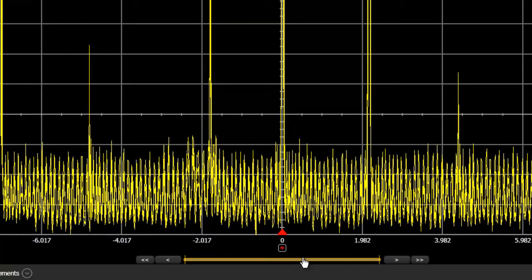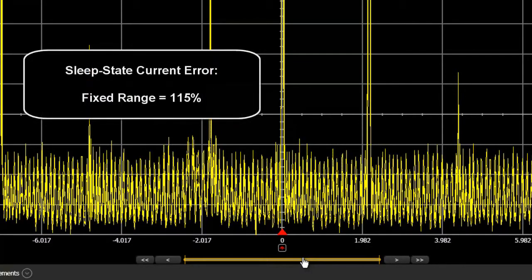With this configuration, the measurement error of the 10 μA sleep state current is 115%. In other words, we're measuring a 10 μA current with an uncertainty of plus or minus 11.5 μA, clearly not sufficient to understand the energy being consumed from the battery.